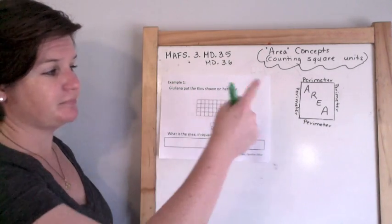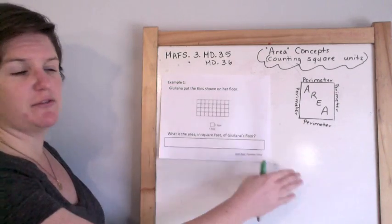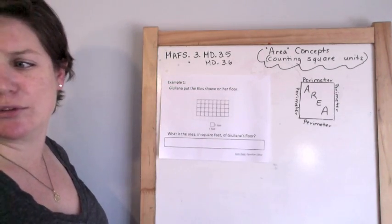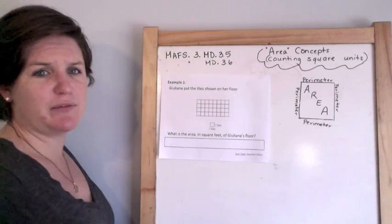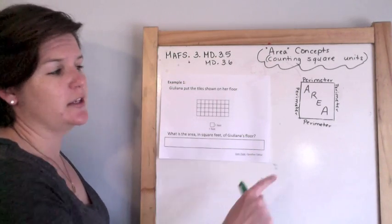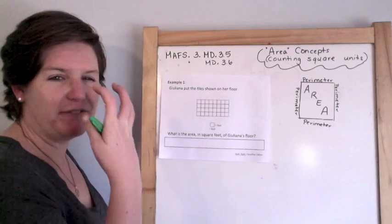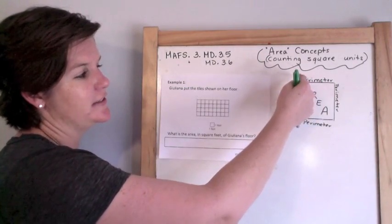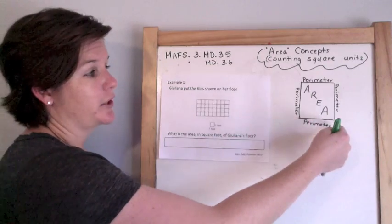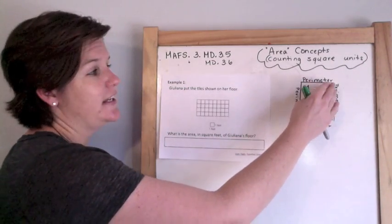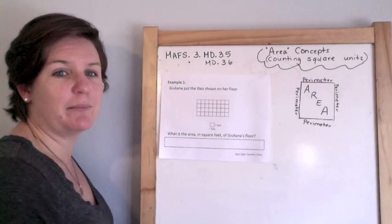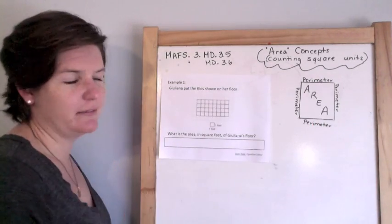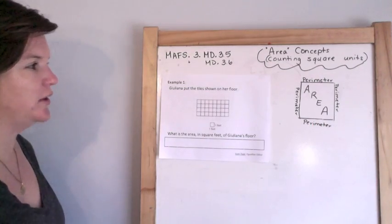Before we get started, I just wanted to put up this visual reminder for this video and the next two videos. The perimeter is when you're adding up all the sides — it's the border. And the area is determining the number for the space that it's covering. So just keep that in your head.